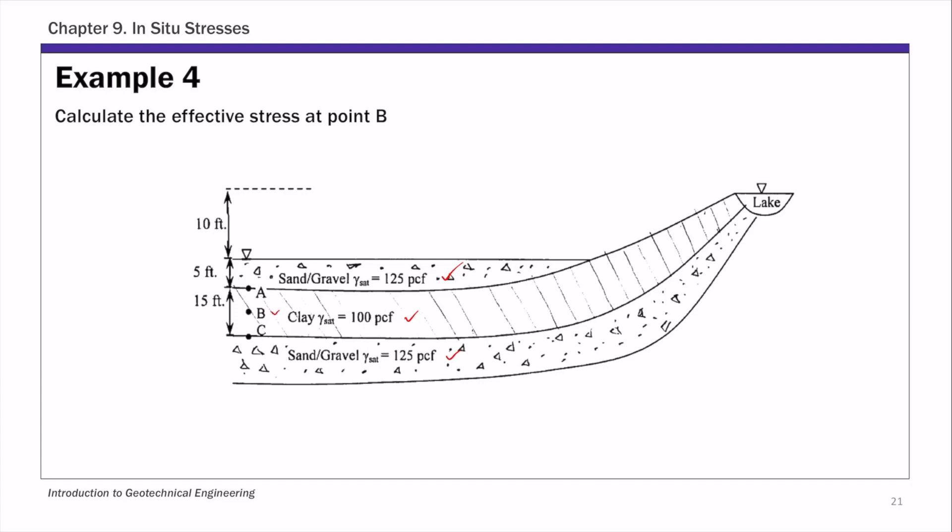For this example, we are going to use the effective stress equation to calculate the effective stress at point B. So sigma B prime is sigma B, which is the total stress, minus the pore pressure at B. The tricky part of this example is we don't know the pore pressure at B.